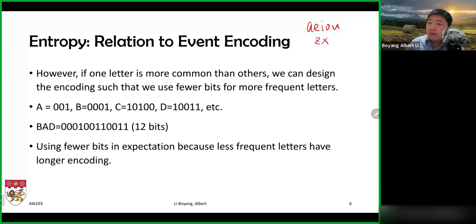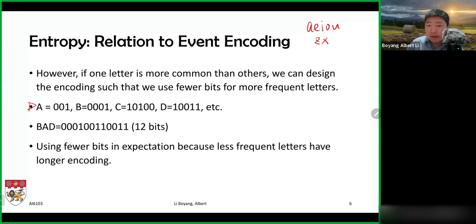We can use that frequency information to improve our encoding. If we have cases A, B, C, D, where A appears a lot more often, B less often but not too bad, and C and D appear least frequently, then we could assign a short encoding to A — maybe 001 — a slightly longer encoding to B, and the longest encoding for C and D. The idea is to use a short encoding for things that are frequent, and a long encoding for things that are infrequent.